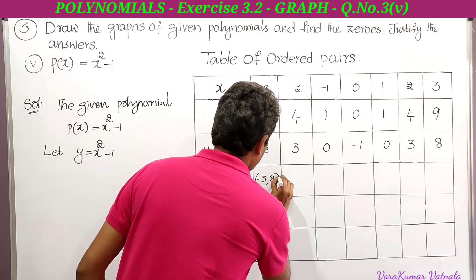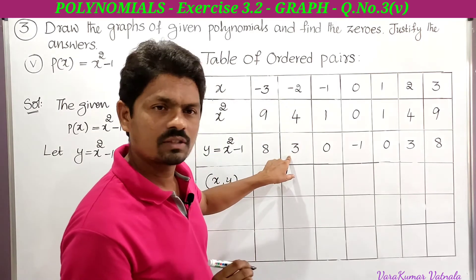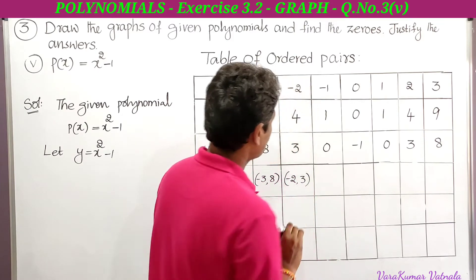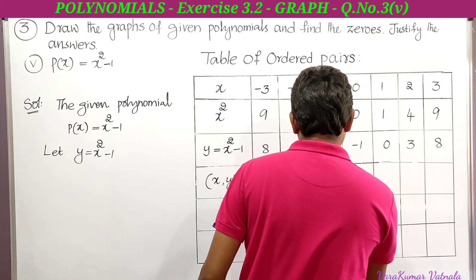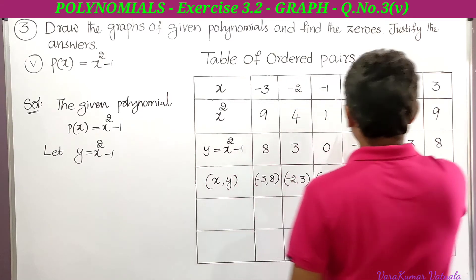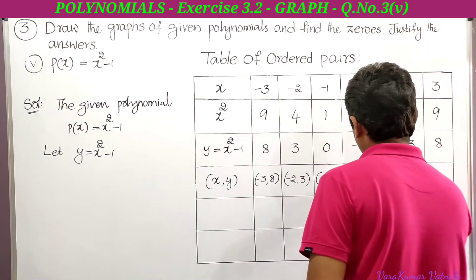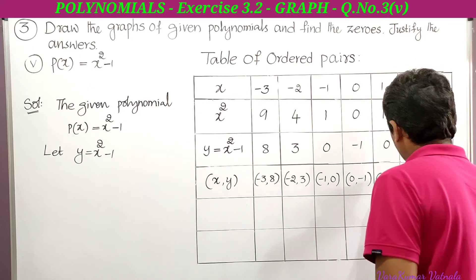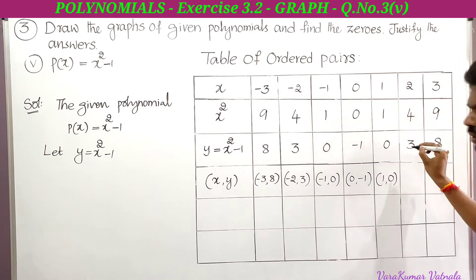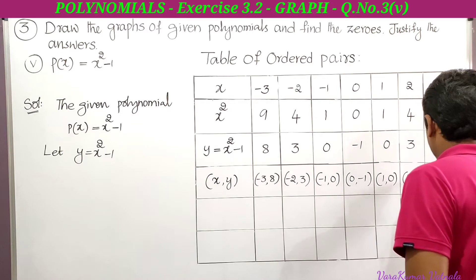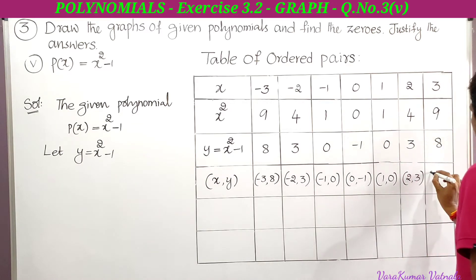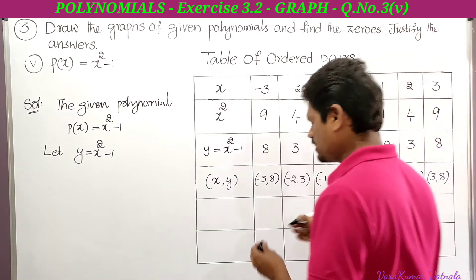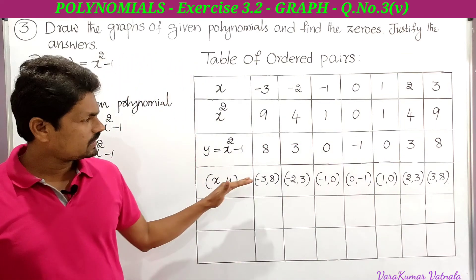The ordered pairs are: (−3, 8), (−2, 3), (−1, 0), (0, −1), (1, 0), (2, 3), (3, 8). Now by plotting these ordered pairs on a graph sheet we can get the curve of the corresponding polynomial.